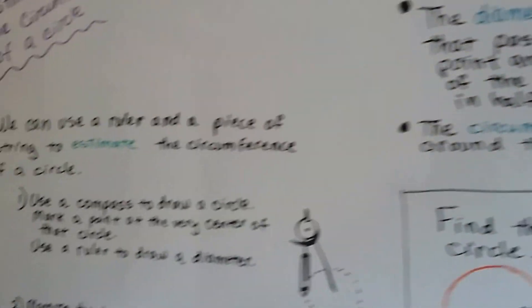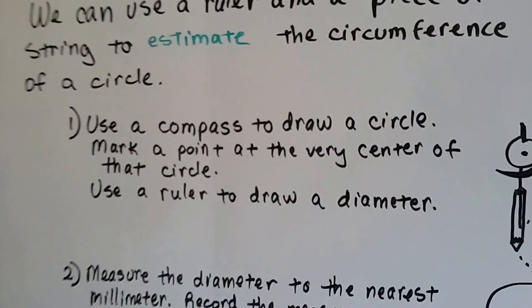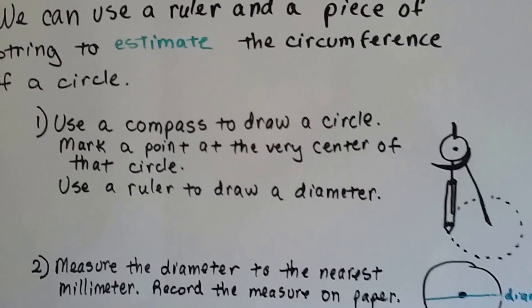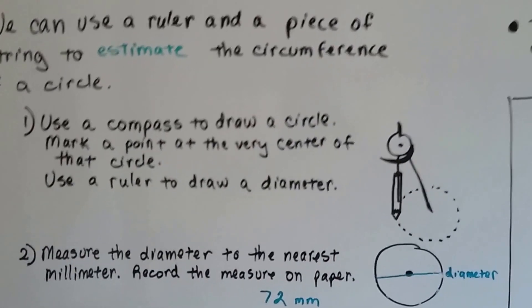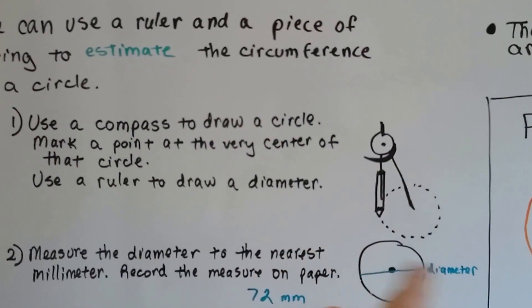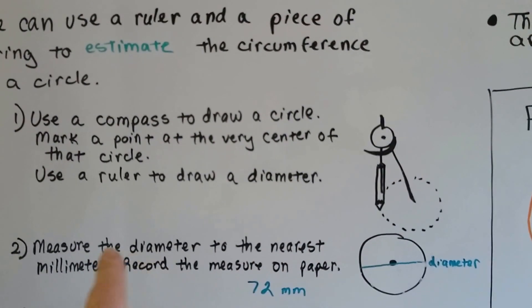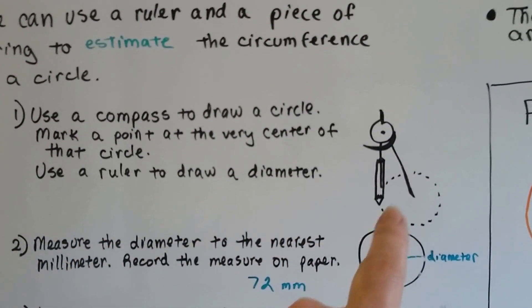Well, we can use a ruler and a piece of string to estimate the circumference of a circle, the outside measure around the circle. You use the compass to draw the circle. You could even use the lid of a plastic bowl or a bowl. You mark a point at the very center of that circle.